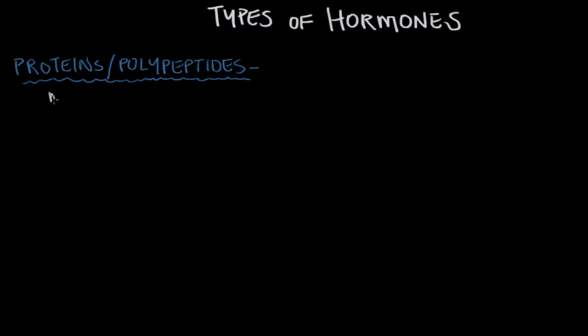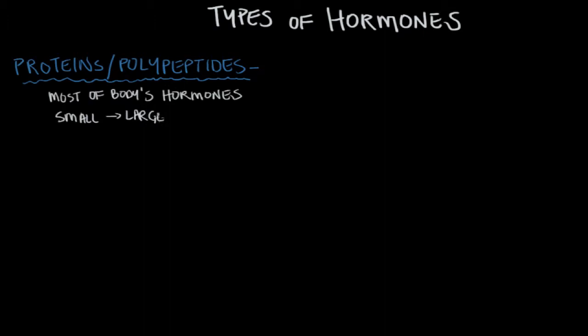Proteins and polypeptides form most of our body's hormones, and these hormones can range from small to large. To give you an example, imagine three or so amino acids linked together forming a hormone — that would be a small polypeptide. Three amino acids means we're talking about a handful of atoms, maybe 20 or so atoms.